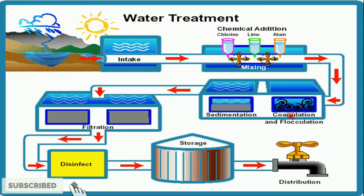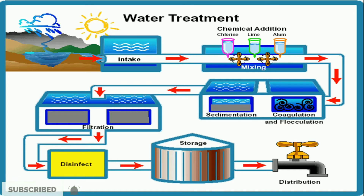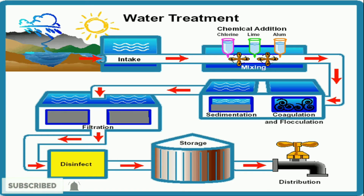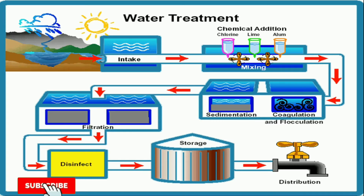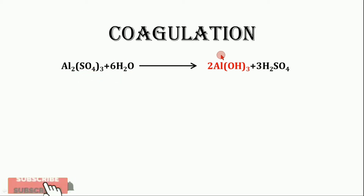After mixing all these chemicals, the water is sent into the coagulation tank. In this method, certain chemicals called coagulants — like alum — are used. When alum is added to water, it gets hydrolyzed to form an insoluble gelatinous precipitate, which is called aluminum hydroxide, Al(OH)₃.